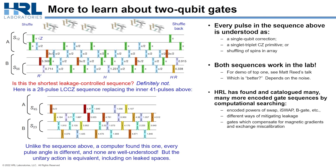HRL has found many of these sequences — many variants of entangling leakage-controlled gates, as well as Berkeley gates, iSWAP gates, and all of the Clifford gates. There are different ways of mitigating leakage and compensating for known static noise sources and gradients. Some were analytically derived and we understand every pulse, but many are just the output of a computer, and there's plenty of theory left to understand them.